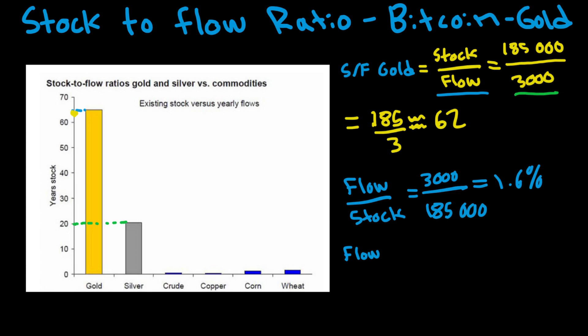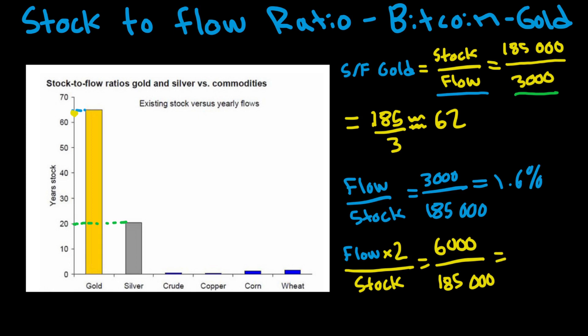Imagine that demand is much higher and suppliers want to produce much more gold, so let's assume the flow doubles — even though this is very unlikely. That gives us 6,000 divided by 185,000, equal to around 3.2%. So even if we double the inflow of gold, the stock would still only increase by 3.2% annually. Because gold has such a large existing stock, an increase in production does not affect its stock — and therefore its price — very dramatically.